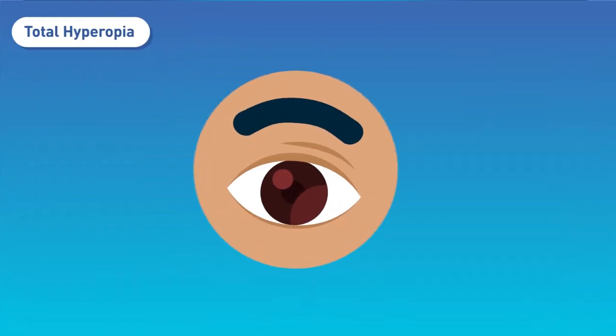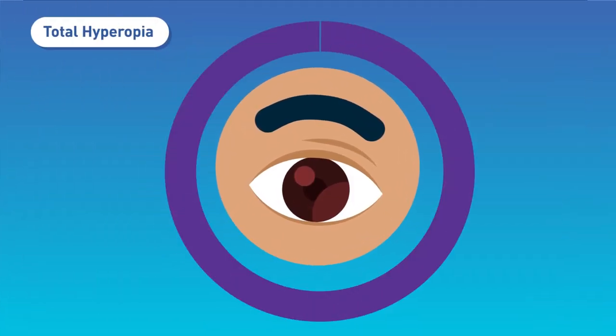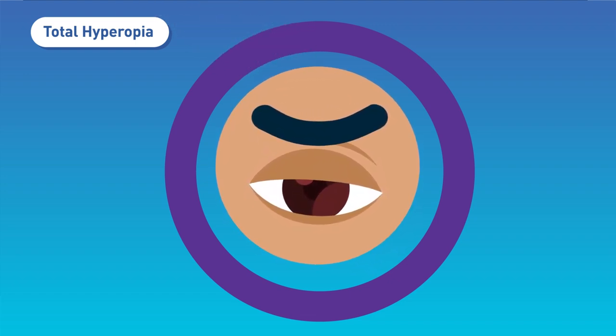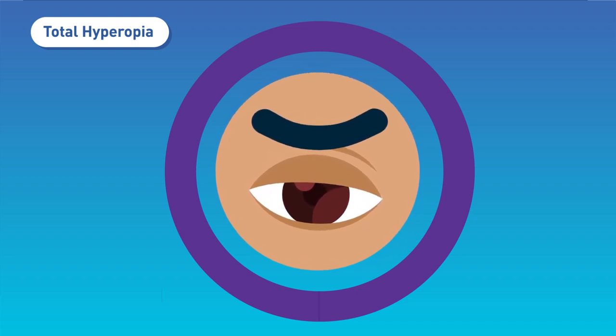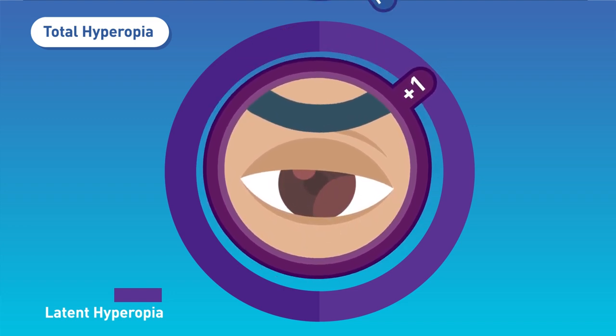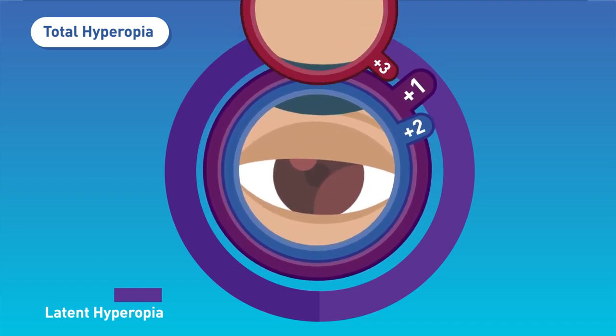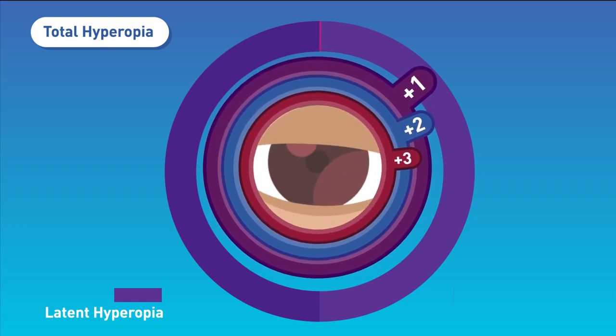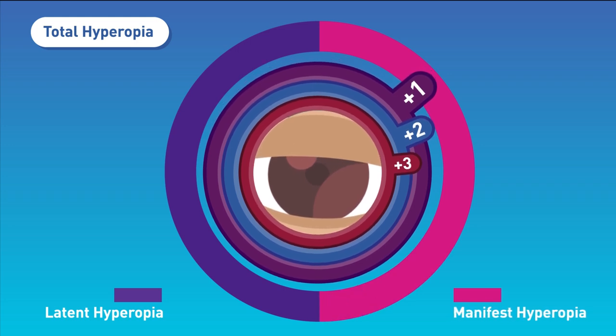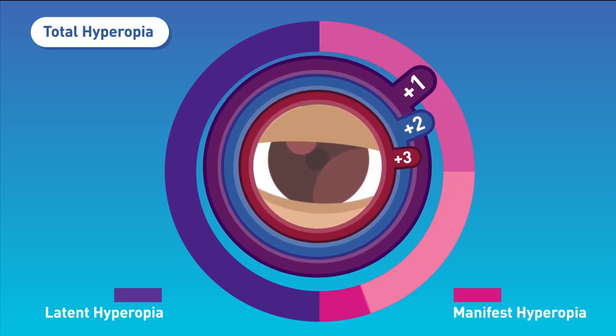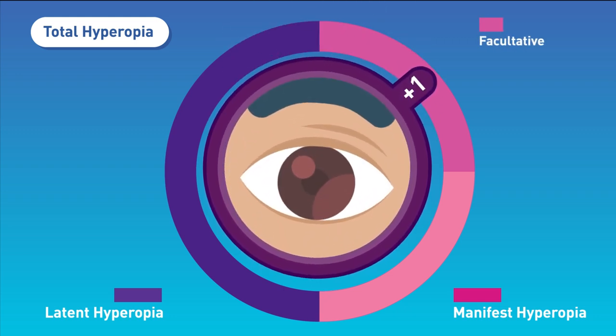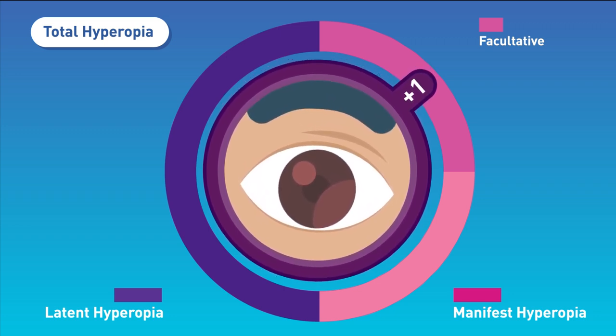Types: 1. Total hyperopia - It is the total refractive error, calculated after complete cycloplegia, intraocular muscle paralysis, induced by certain drops. 2. Latent hyperopia - Amount of hyperopia corrected by the focusing power produced due to normal tone of intraocular ciliary muscles. It is usually one diopter. 3. Manifest hyperopia - It is the remaining portion of hyperopia, divided into: 4. Facultative - Amount of hyperopia corrected by the focusing power produced due to active contraction of ciliary muscles. 5. Absolute - Amount of hyperopia that cannot be corrected even by contraction of ciliary muscles.